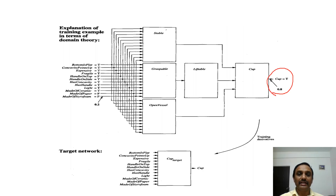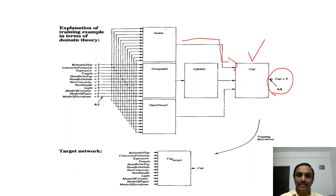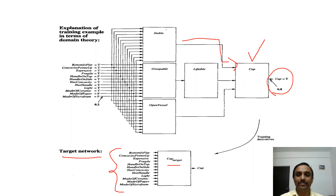All weights are initialized normally, similar to the backpropagation algorithm. Here, each one represents one network, and the output of one network is connected as input to another network. This one is the target network. The instances provided include whether the bottom is flat — this is the example of lifting a cup. Whether it is stable or not to keep on the table, whether it is liftable or not — these are the instances for that example. By applying this to the cup target function, this is the final representation after training derivatives.